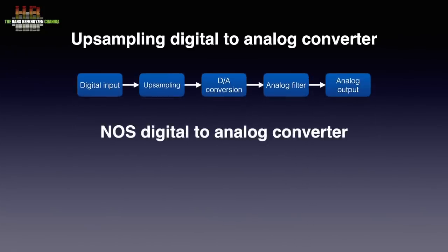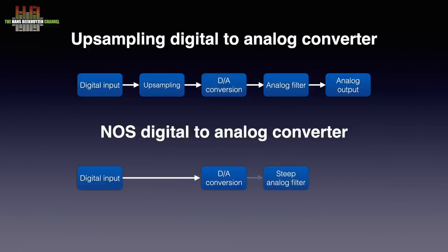Now let's look at the non-oversampling DAC, aka NOS DAC. After the digital input the signal is sent directly to the D-to-A conversion. From there it is sent to the analog reconstruction filter that now has to be extremely steep — in theory 96 dB per single note. That is already quite a job in the digital domain; in the analog domain it's even harder. But the artifacts of digital filters differ from those of analog filters, while again budgets play a defining factor. Steep analog filters can also overshoot, but the clipping is somewhat softer.